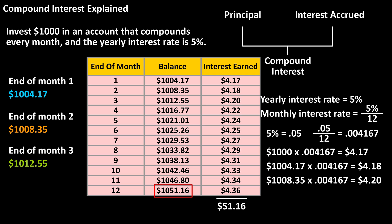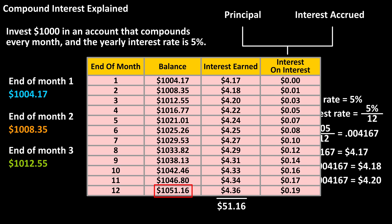This happens because you're making interest on interest. For instance, after month 12, the interest payment was $4.36. We know that the interest on the $1,000 initial investment is $4.17, because that's what it was after month one, before there were any interest payments. So we can add another column titled 'interest on interest.' This is each month's interest payment minus the $4.17 interest payment on the principal. If we total this column up, we get $1.12 — so after one year, you made $1.12 of interest on interest.